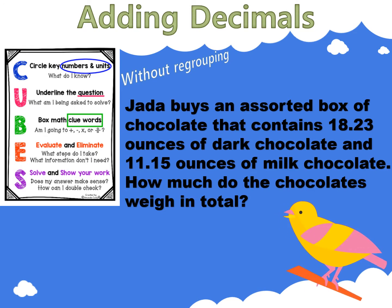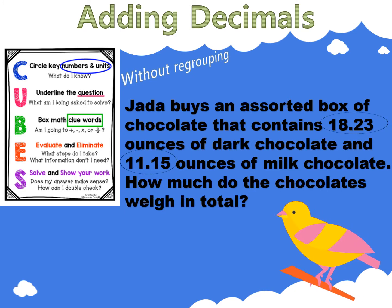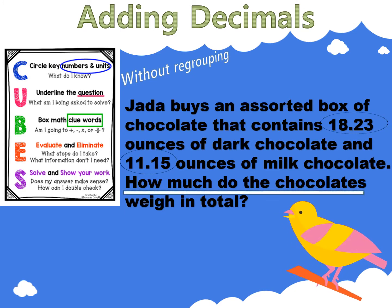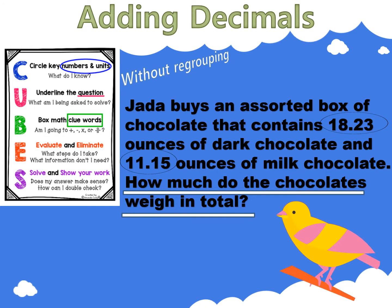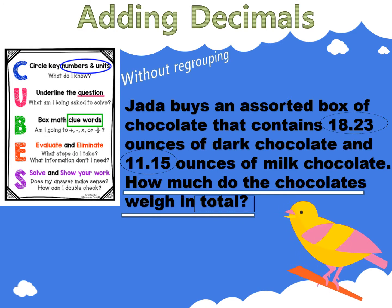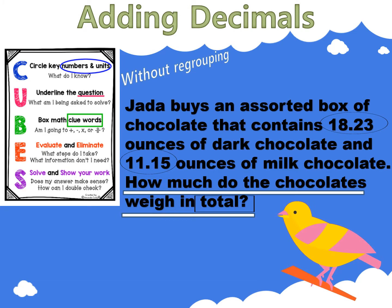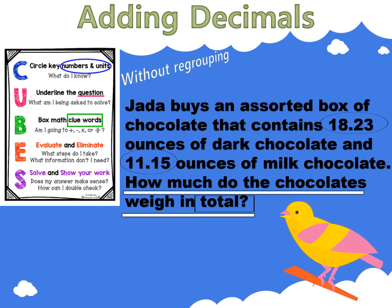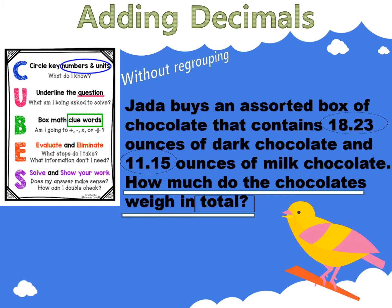Circle the numbers you know. Underline the question: How much do the chocolates weigh in total? Box the clue word 'total.' Now evaluate — the clue word 'total' is indicating that we should add. We will solve this problem by using an addition number sentence.